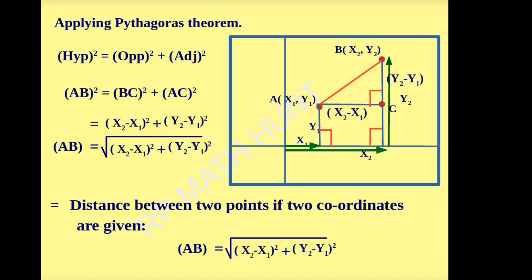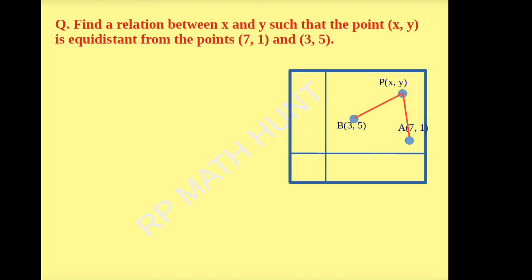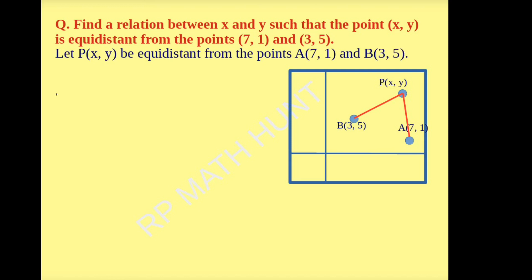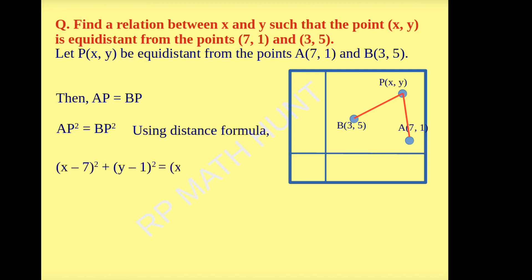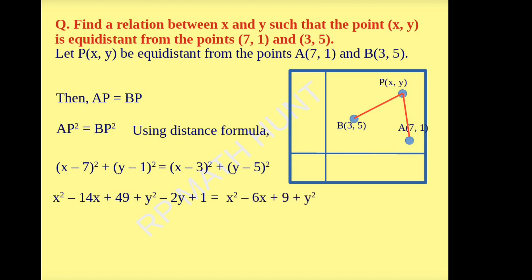Now let us observe some problems based on the distance formula. Find a relation between x and y such that the point (x, y) is equidistant from the points A(7, 1) and B(3, 5). Let P(x, y) be equidistant from A(7, 1) and B(3, 5), so PA = PB. Then PA² = PB². Using the distance formula: (x − 7)² + (y − 1)² = (x − 3)² + (y − 5)². Expanding: x² − 14x + 49 + y² − 2y + 1 = x² − 6x + 9 + y² − 10y + 25.